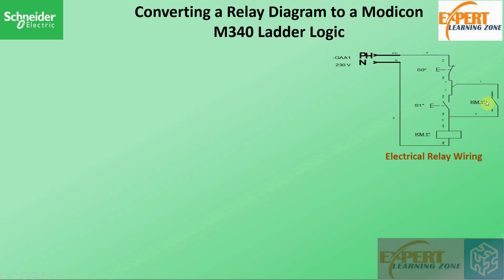This is our relay diagram that we want to convert to a relay ladder logic. Here we have our phase and neutral, the switch S0 and the switch S1. S0 is a normally closed switch and S1 is a normally open switch. When S1 is pushed, current will flow from the phase through S0 to the coil, and this load is now energized.